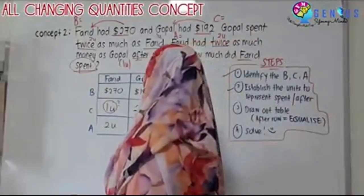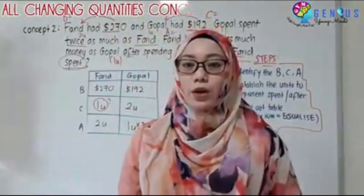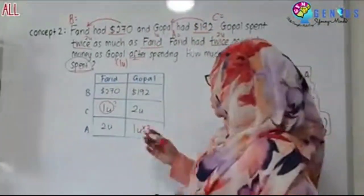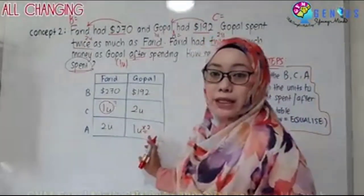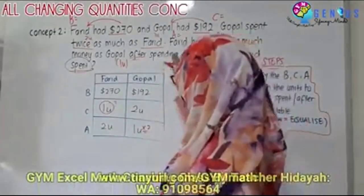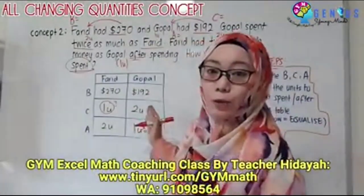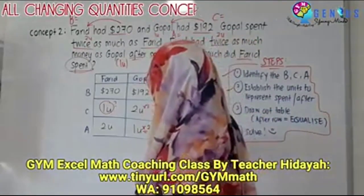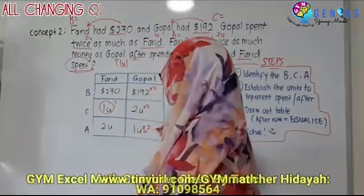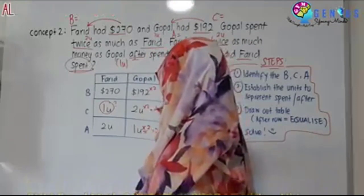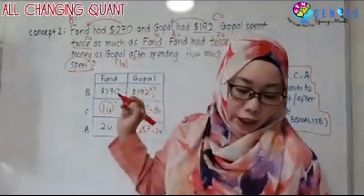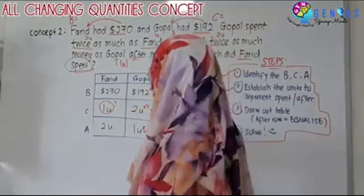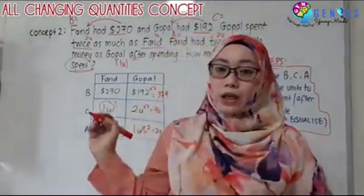We can make them the same. So this one unit will be times two. Whatever we do to a box in the column, every box in that same column does the same — times two as well. So here becomes two units, here becomes four units, and here we get $384.